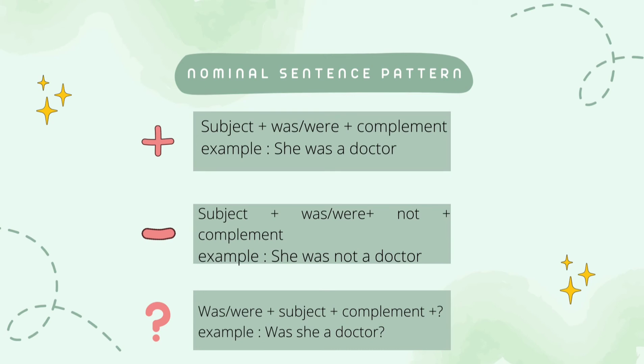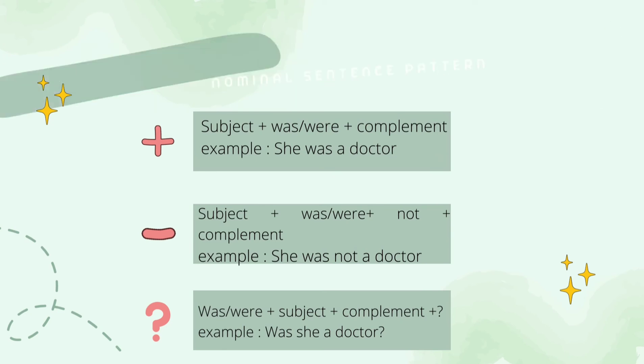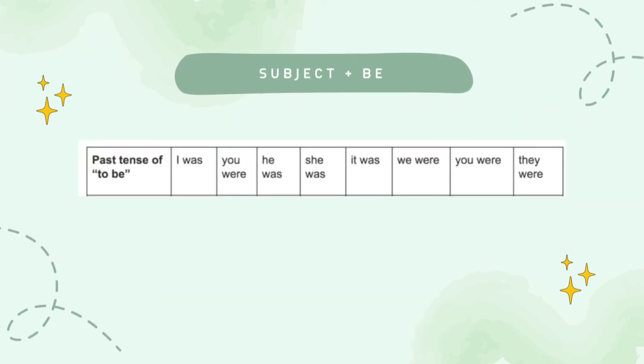So, for nominal sentences — both positive, negative, and interrogative forms — make sure that the be you use is be past. Also, don't forget that the be used must be in accordance with the subject. You can take a look at the following table to help you remember the appropriate be for each subject.